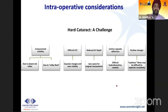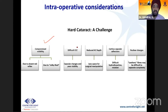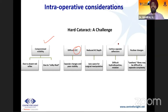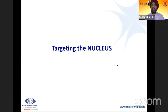The challenges of a hard cataract include compromised visibility since the red reflex may not be good — the milky fluid causes the red reflex to disappear. Capsular changes and poor visibility make CCC difficult. The anterior chamber depth is often compromised as the lens has increased in volume, leaving less surgical space. Cortico-capsular adhesions make hydro-dissection and rotation difficult.